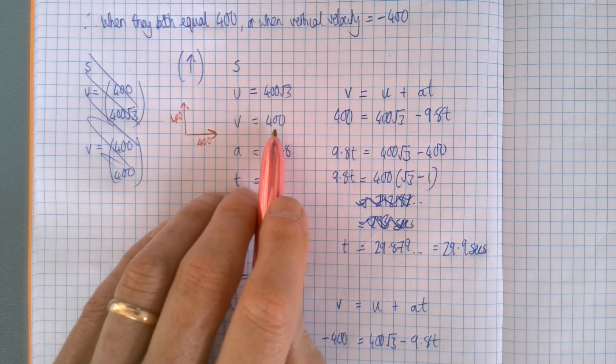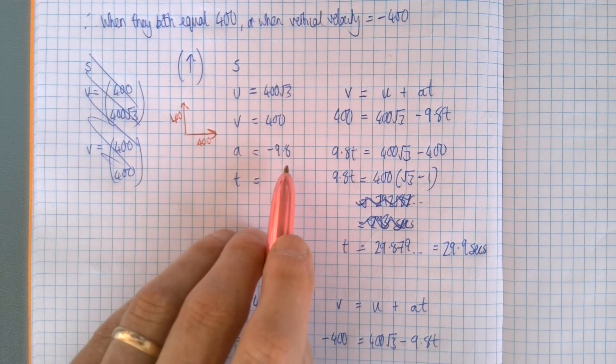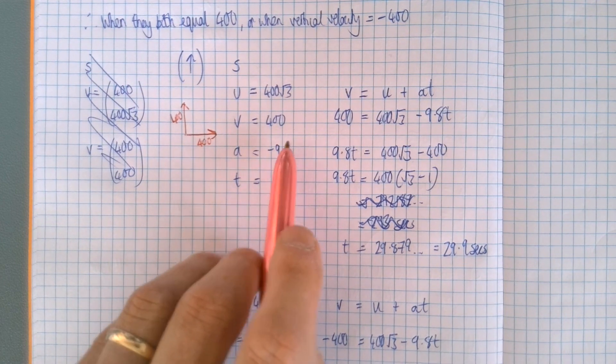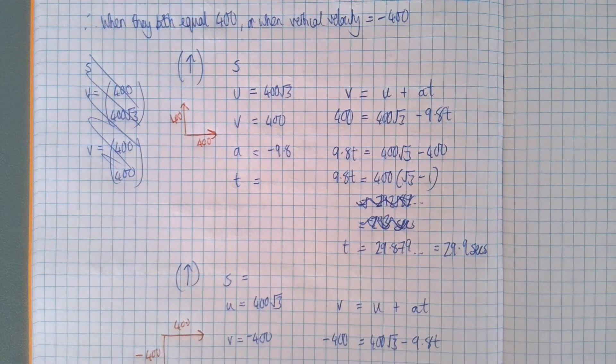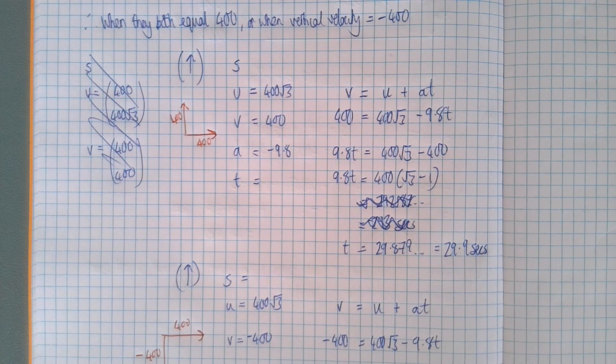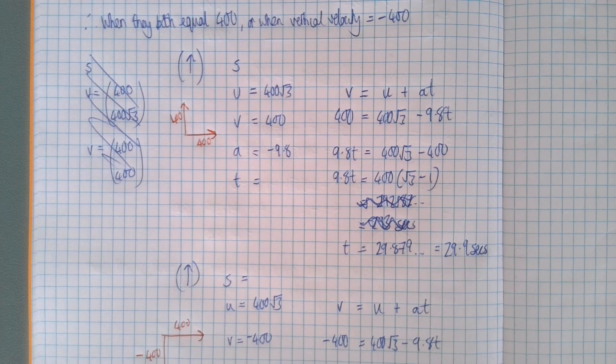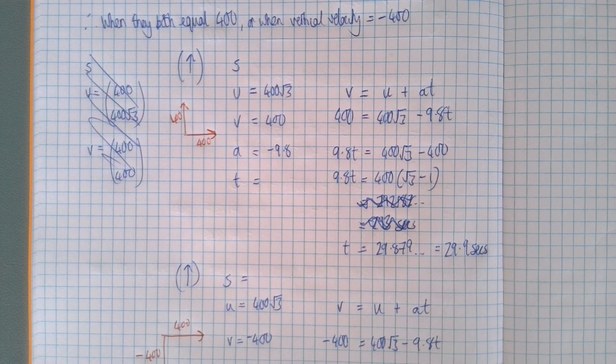When is it going to be 400? Acceleration minus 9.8. V equals u plus at. I think we've only used v equals u plus at and s equals ut plus a half at squared in the questions that we've done, certainly the vast majority of them.